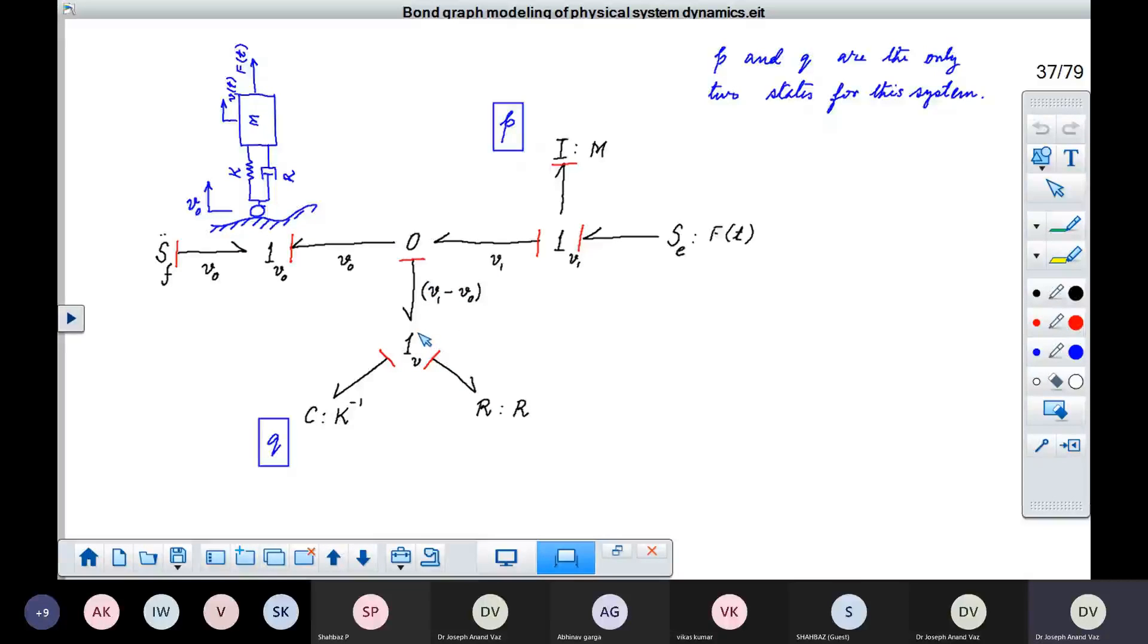So this bond's flow is equal to this bond's flow minus this bond's flow. So V1 minus V0. And this is common to both these elements, K and R. So this goes to K, the C element here. And this goes to the R element. So you can see that we have got the complete bond graph model for this system, which is slightly different.